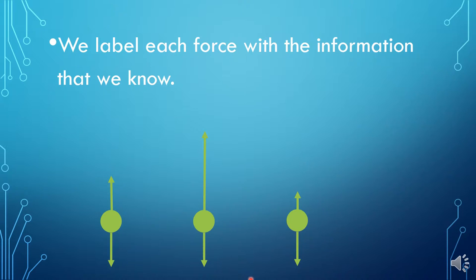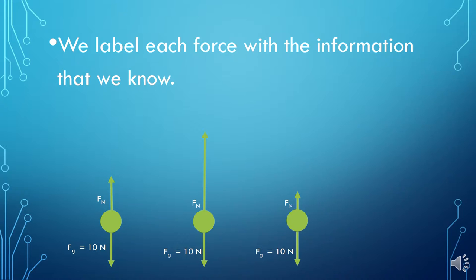We label each force with the information we know about that force. For example, if I know the force of gravity acting on an object has a magnitude of 10 newtons, I would write Fg = 10 N on each arrow pointing down. If I knew the upward force was a normal force — so these are objects sitting on some surface like a table, the ground, or my hand — I would label all of those the normal force. If I knew the magnitude I could label that, but if I don't, I'll just label them by the type of force.